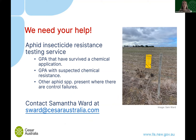CESAR Australia does considerable research into insecticide resistance, relying on agronomists and growers sending samples from the field. We have a free aphid insecticide resistance testing service — this allows us to stay on top of where resistance is and report back to people in the field. If you've had green peach aphid survive a chemical application, or any aphid species where there's been a control failure, we'd really love to hear from you. Please contact me or Samantha Ward.